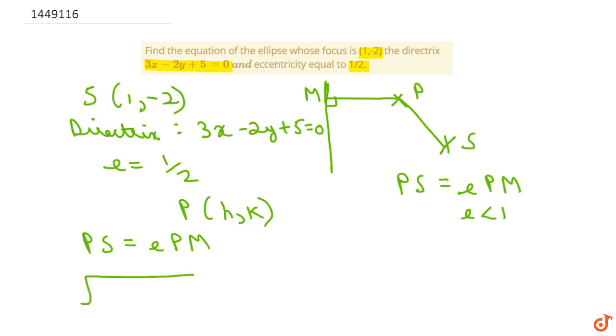So PS, using the distance formula, will be √[(h - 1)² + (k + 2)²], which is equal to e times, that means 1/2 times PM. Now we know that we can find the perpendicular distance from a point to a line.